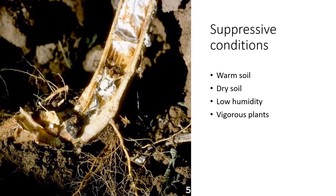Suppressive conditions include anytime soil starts getting hot above 80 degrees Fahrenheit, which suppresses Sclerotinia. Dry conditions, low canopy humidity, and vigorous plants that are not wounded are all suppressive in terms of reducing disease. Anytime we can utilize any of these practices, it will really benefit our crops.